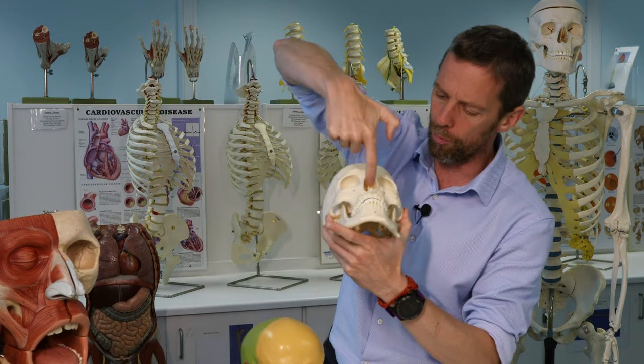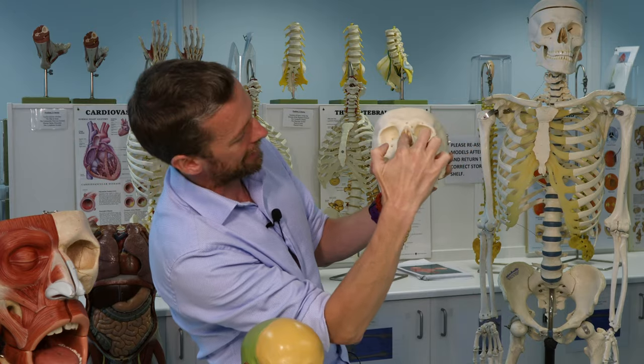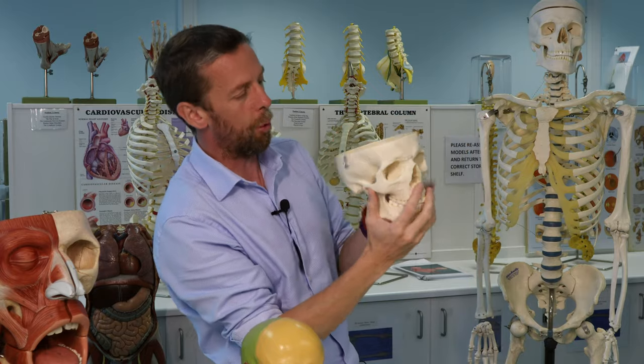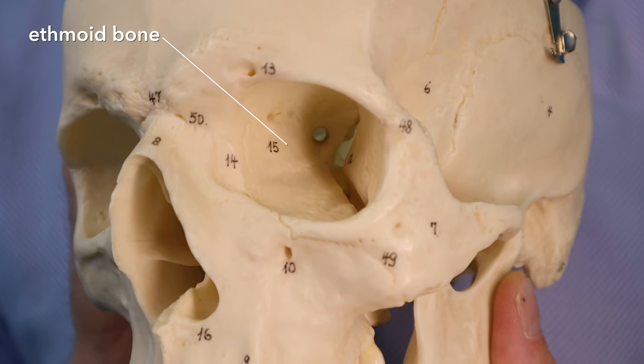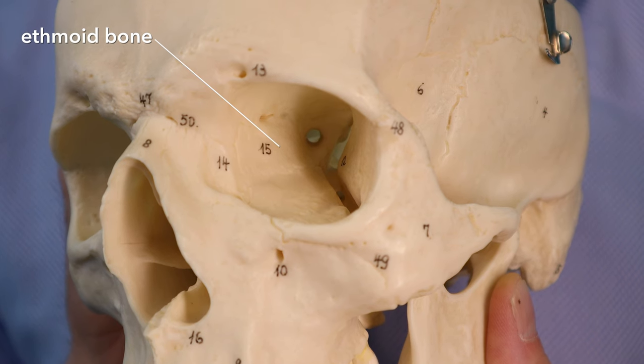The ethmoid bone is also forming the roof of the nasal cavity and the medial walls of the orbit, so it's very central. It's difficult to see all that on a plain white skull. Those little holes running through it — the ancient Greek word for sieve is 'ethmos,' and 'oid' means shaped, so ethmoid means sieve-shaped. The ethmoid bone is essentially a sieve.